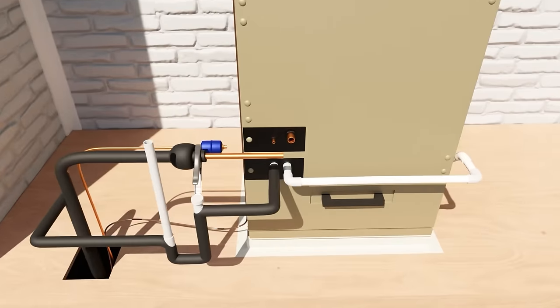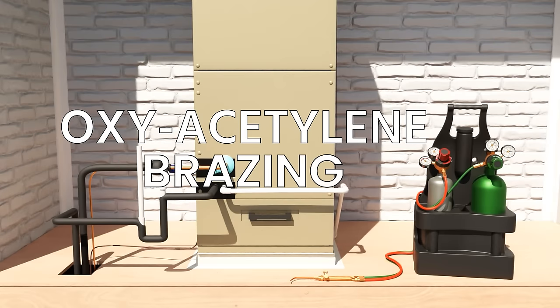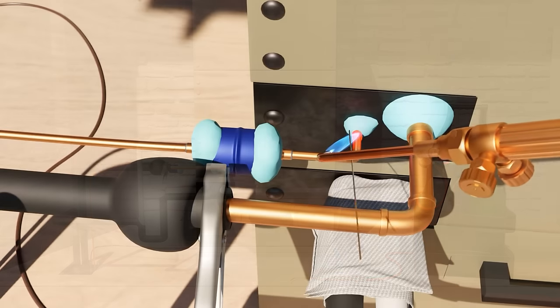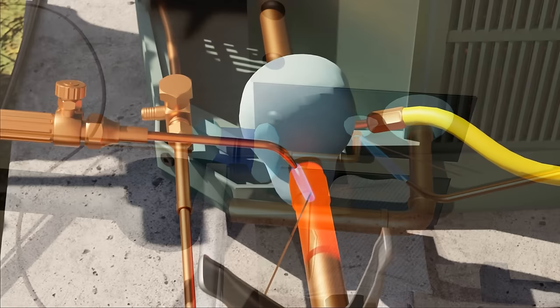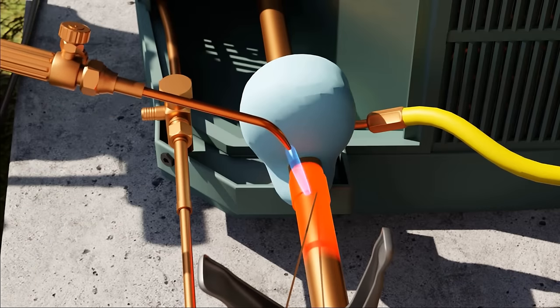In this video we're going to show brazing using an oxy-acetylene torch rig. We're going to start with brazing in an air handler and condenser, though these practices apply to all sorts of copper to copper brazing.